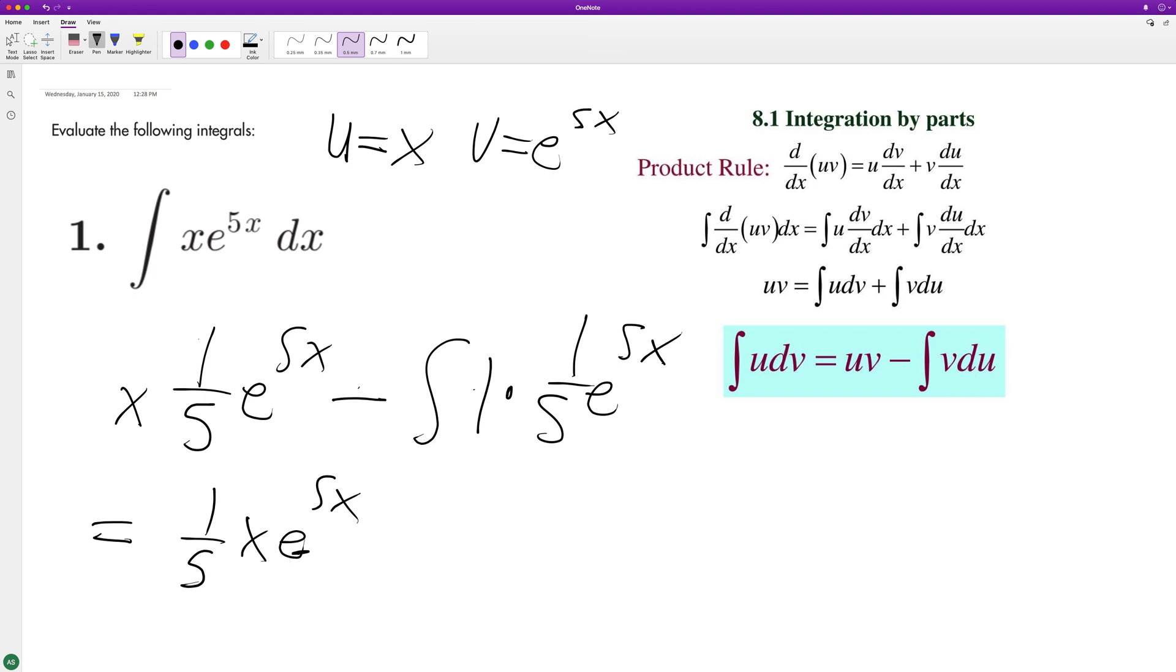And then we integrate this again. Since it's 1, it makes it really easy. The anti-derivative of 1/5 e raised to the 5x is going to be 1 over 25 e raised to the 5x, and then plus C.